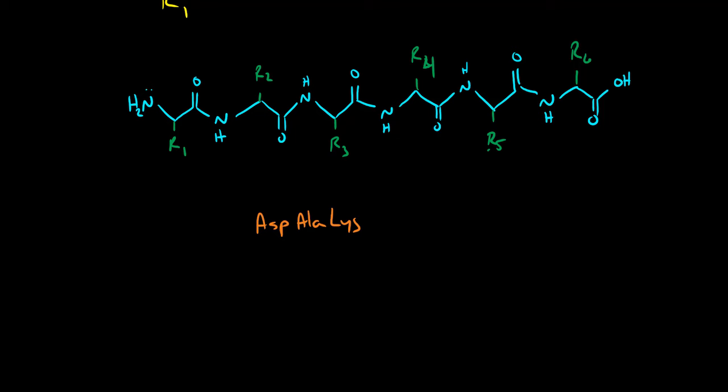These are always drawn from the N terminus to the C terminus. So when we draw this we need to have our amine group on the Asp and our carboxylic acid or C terminus on the lysine. These things are always arranged in this way from the N terminus where we have the NH2 to the C terminus where we have the carboxylic acid.